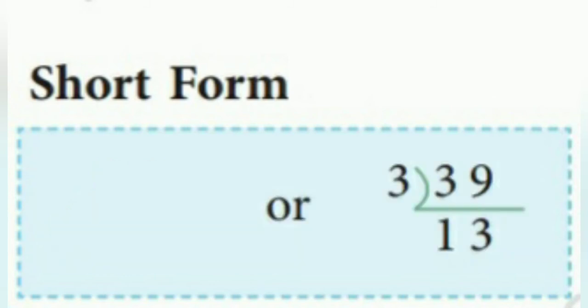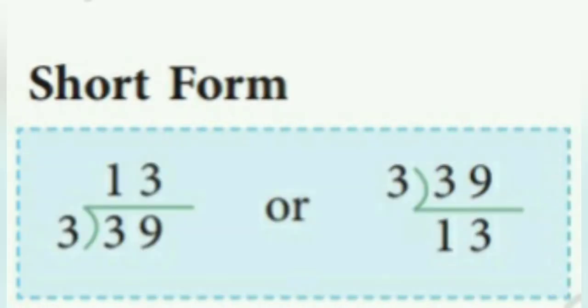We can also write it like this: 3 ones are 3, write 1 down at tens place, then 3 threes are 9, so at ones place we write 3. The quotient is 13. So 39 divided by 3 is equal to 13.